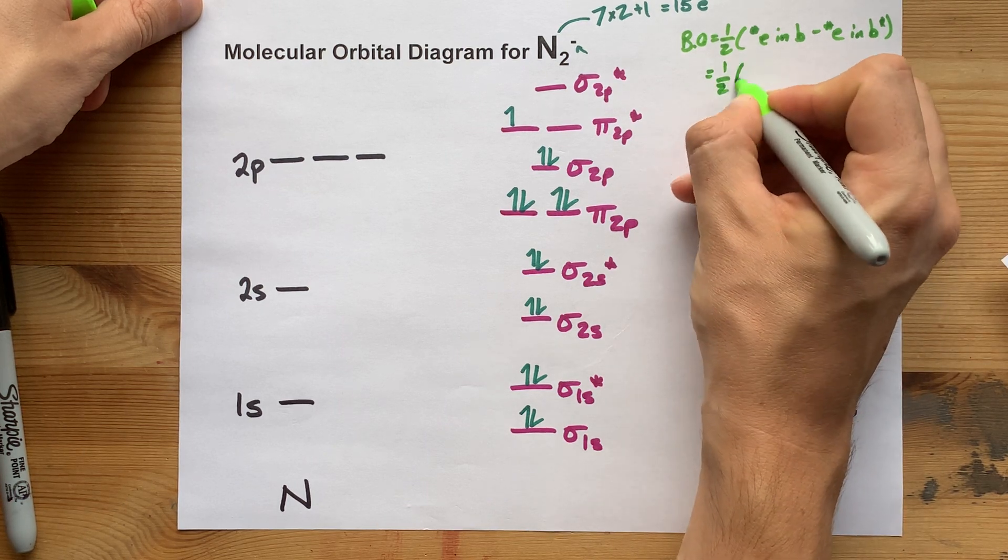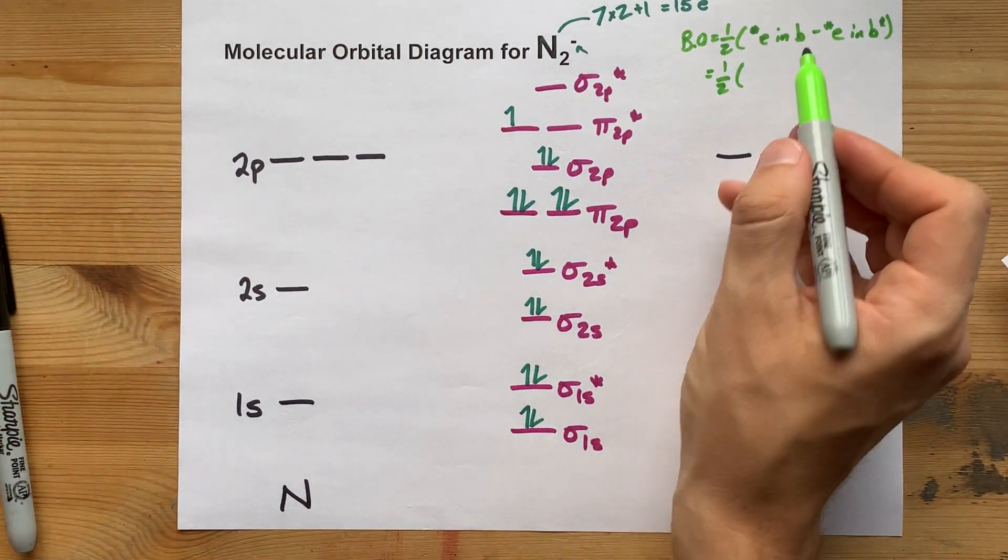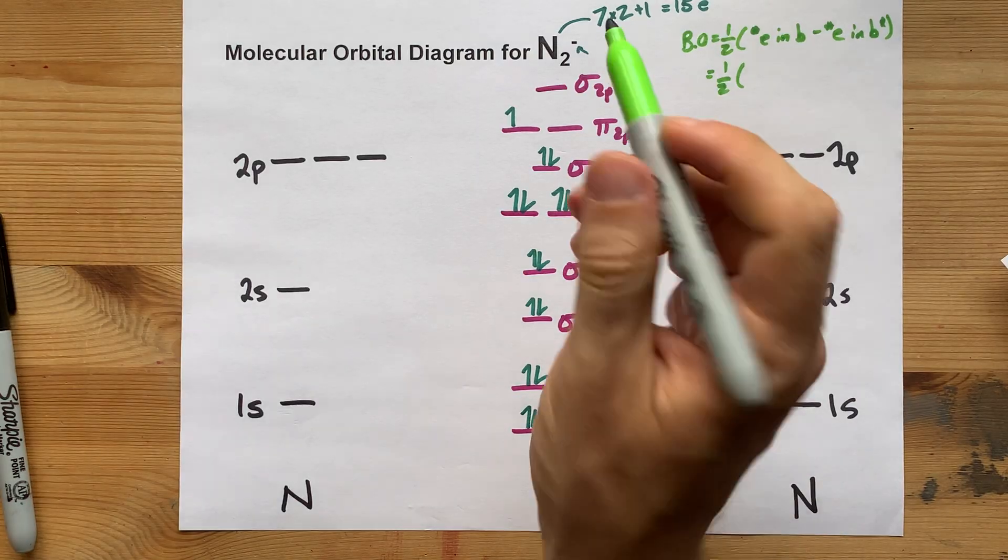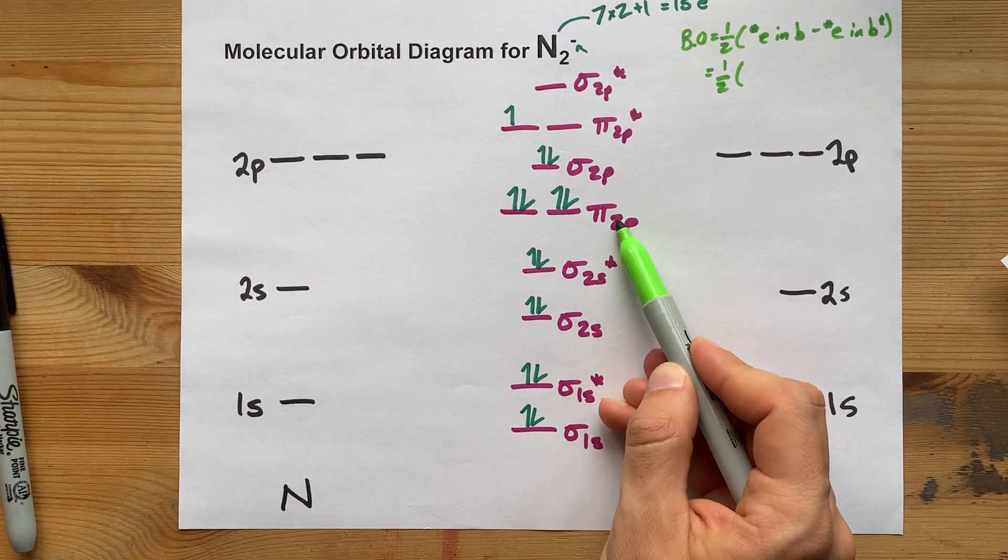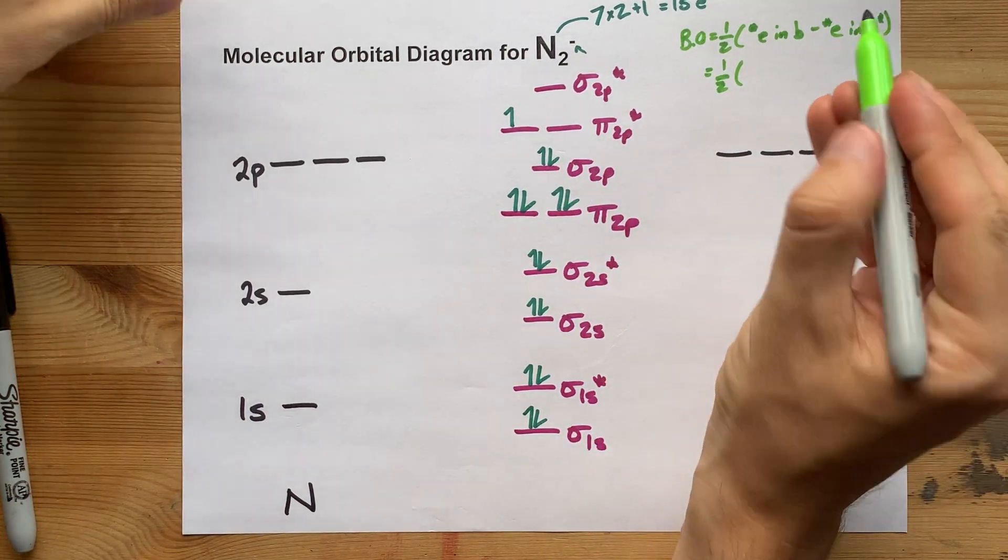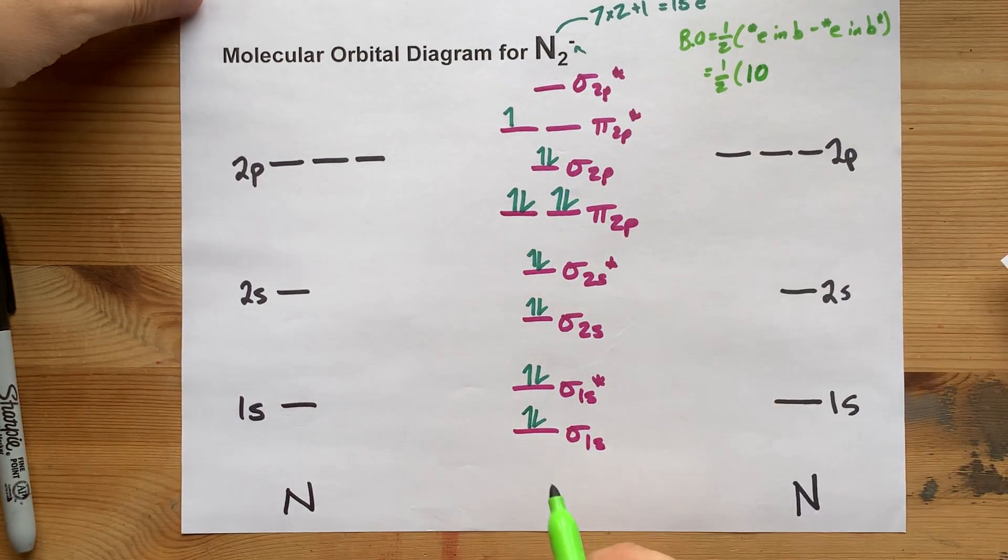which is one half of the number of electrons in bonding orbitals minus the number of electrons in antibonding orbitals. You're going to have to count that after you draw the diagram. Now, bonding orbitals have no asterisks, so 1, 2, 3, 4, 5, 6, 7, 8, 9, 10 electrons in bonding orbitals.